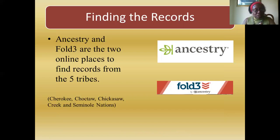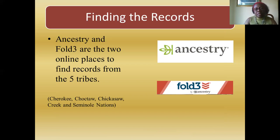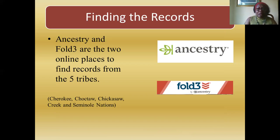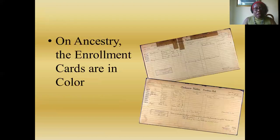There are two primary online resources: Ancestry.com and Fold3.com. There are some other places as well, but let's look primarily at these two sites. Both of them present records of the Five Civilized Tribes — Cherokee, Choctaw, Chickasaw, Creek, and Seminole Nations. In another video I will actually go live on the sites so you can see me walk through them.